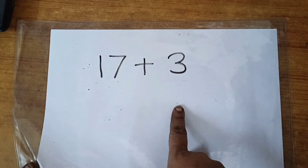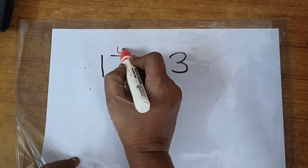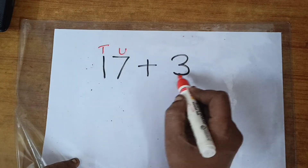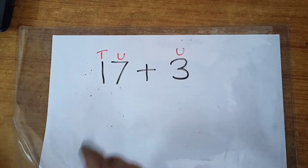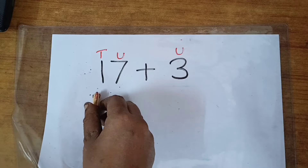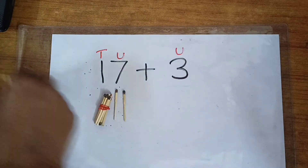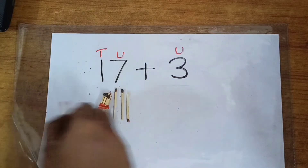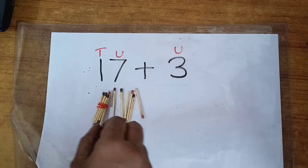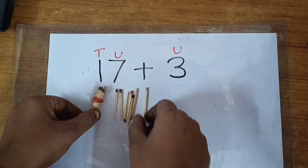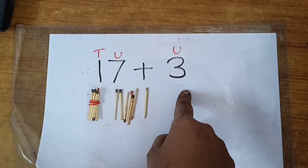Children, let us take another sum: 17 plus 3. In 17, we have 7 units and 1 ten, plus 3 units. Now let us take the sticks. 1 ten — that is 1 ten. And 7 units: 1, 2, 3, 4, 5, 6 and 7. So this became 1 ten 7 units, and plus 3 units.